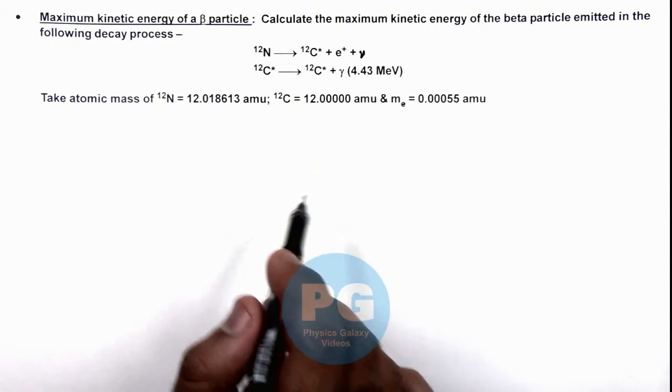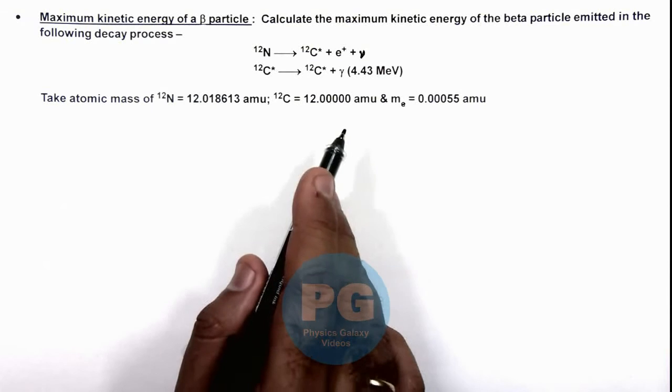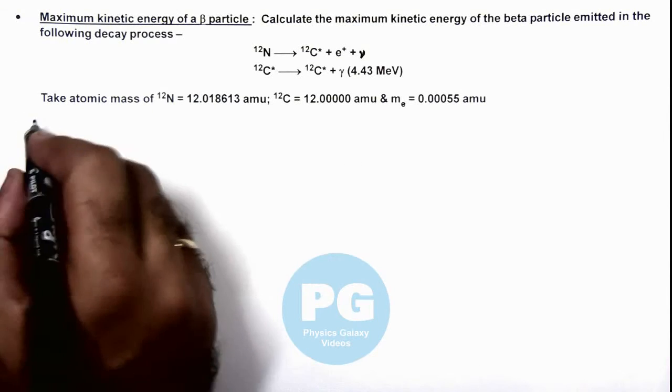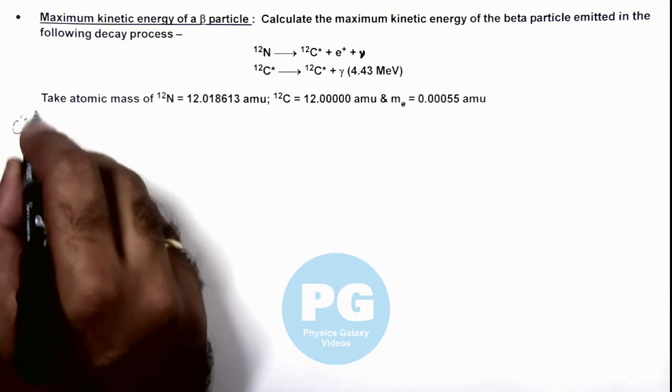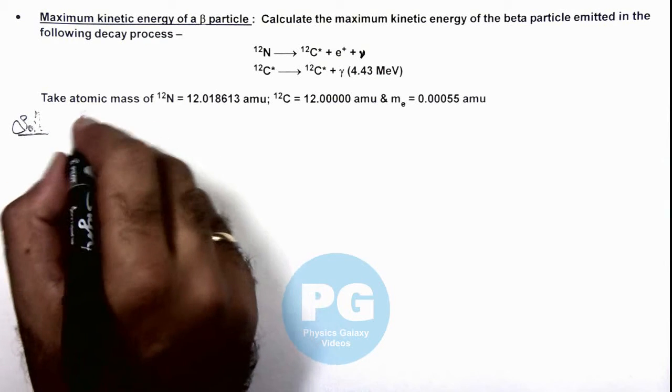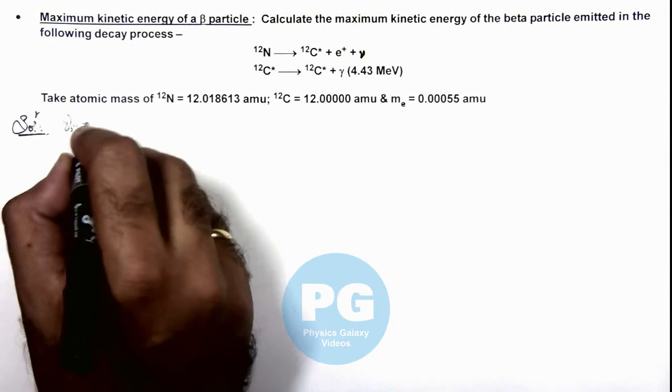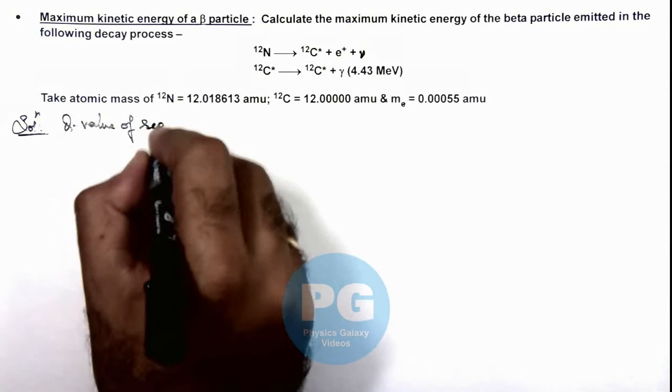All the masses are given here. To calculate the maximum energy of the beta particle, first we need to get the Q value of the reaction.